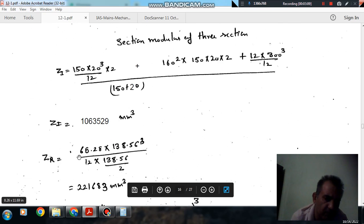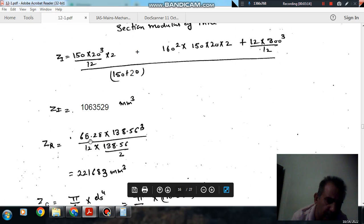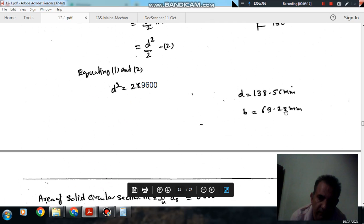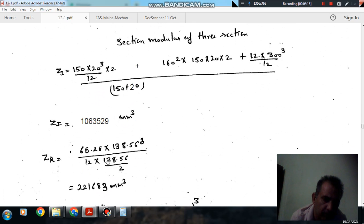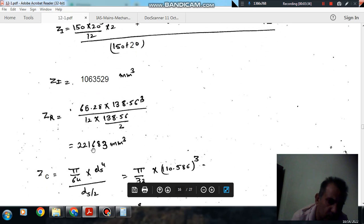And similarly for the rectangular section, the moment of inertia is bd cube by 12. So b is here 69.28 and d is here 138.56 cube, 138.56 cube by 12. And section modulus, to find section modulus we'll divide it by 138.56 by 2, d by 2. So that comes out as 221,683 mm cube.